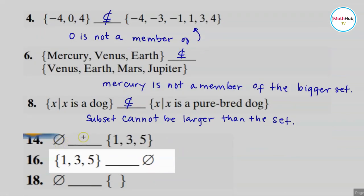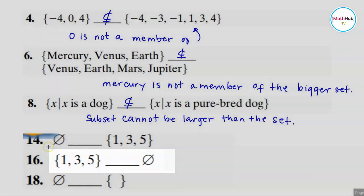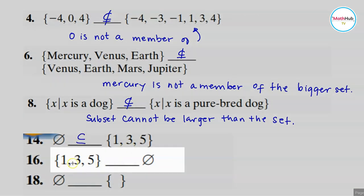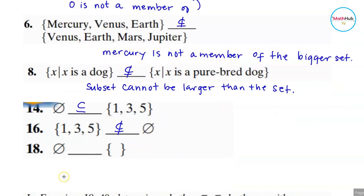For number 14, is the empty set a subset of this set? We know that an empty set is a default subset of any set, so we have a subset here. What about the set {1, 3, 5} — is that a subset of the empty set? This set contains one, three, and five, but the empty set contains nothing, so this is not a subset. Again, a subset cannot be larger than the set.